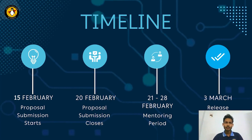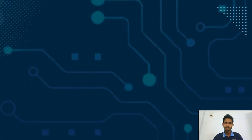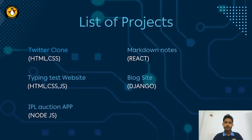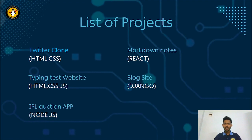Now, the time all of you might be waiting for — the projects for this year. First, we have the Twitter clone, based on the tech stacks of HTML and CSS — one of the very greatest projects for beginners. Even if you don't know HTML and CSS, you can quickly learn it and start contributing. Next, we have the typing test website based on HTML, CSS, and JavaScript. Then for frontend fanatics, we have Markdown Notes based on React.js. For those who know Python and Django, we have the Blog Site project. Finally, for those who know Node.js, we have the IPL Auction app, taking in elements from the entire MERN stack.